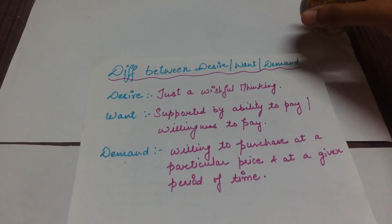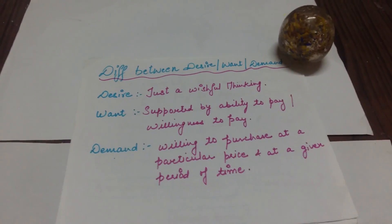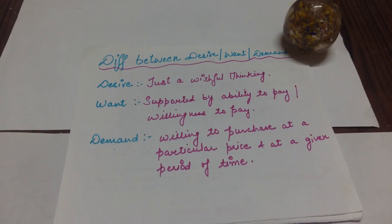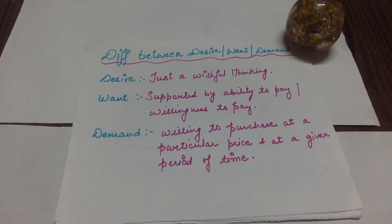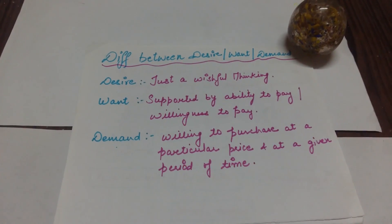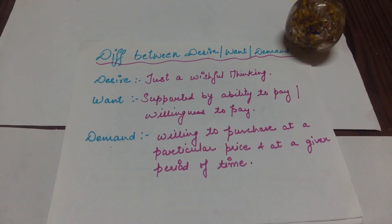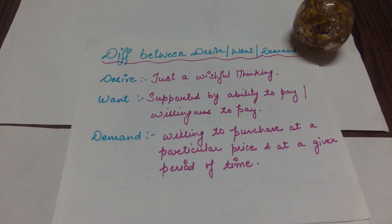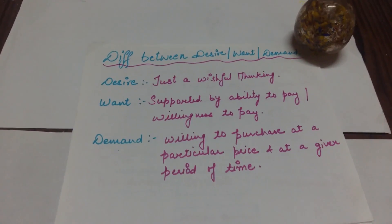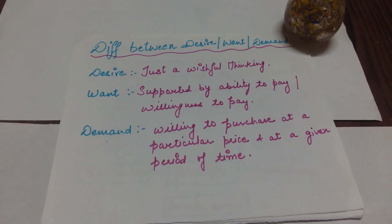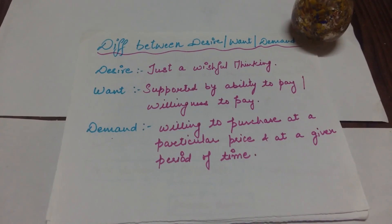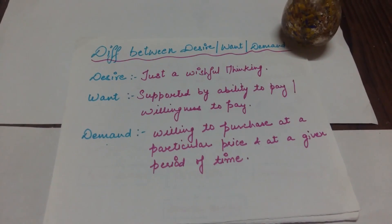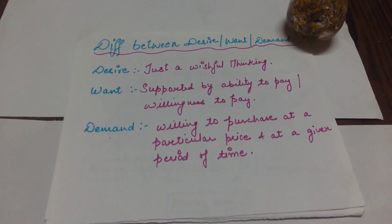First of all we need to discuss the difference between desire, want, and demand. Desire is just a wishful thing — you want to buy a commodity in the future, but you don't have enough money to buy that commodity. There is a lack of money. Want is when you have enough money to buy that commodity. Your desire becomes your want when it is supported by an ability to pay.